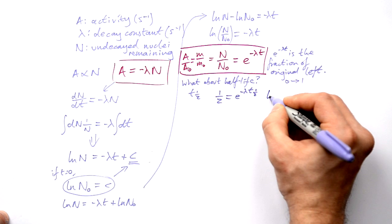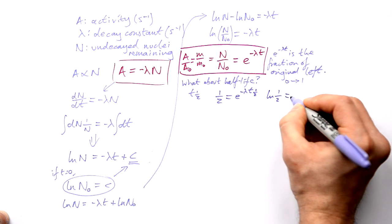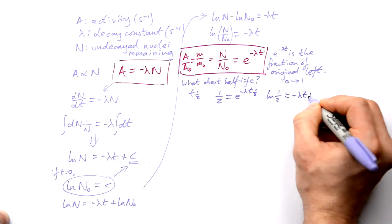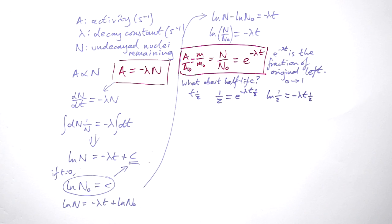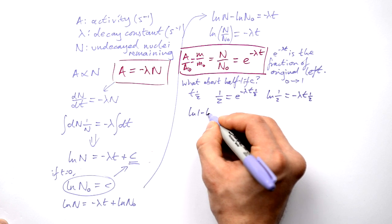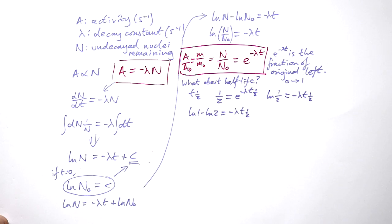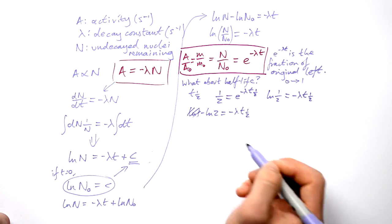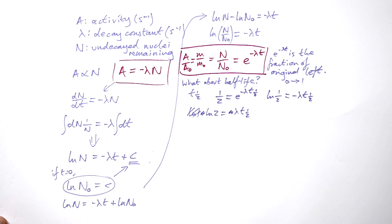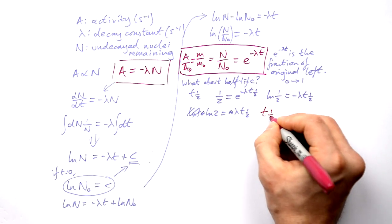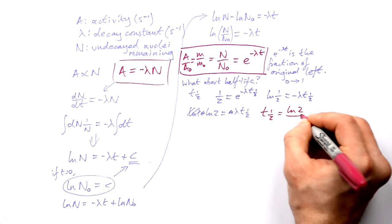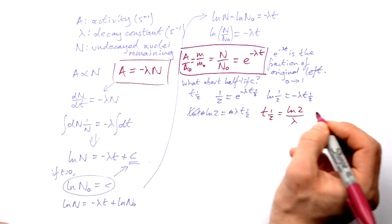Taking logs of both sides: ln of a half equals minus lambda times the half-life. Using log identities, ln(1/2) is ln 1 minus ln 2. ln 1 is 0, so that disappears, the minuses cancel, and rearranging we end up with: half-life equals the natural log of 2 divided by the decay constant.